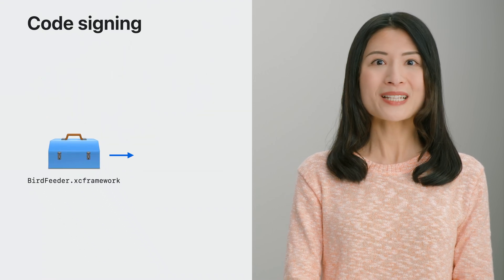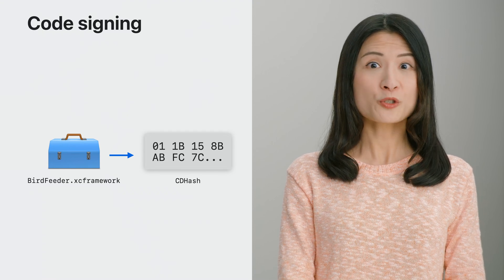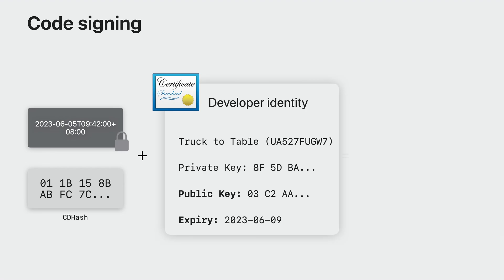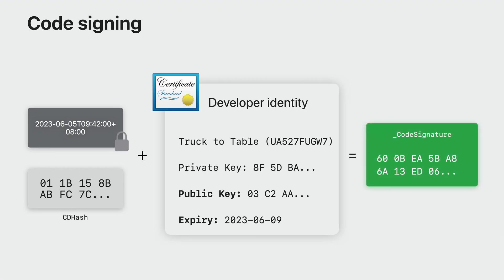At a high level, code signing works by first generating a code directory hash, also known as the CD hash, of your compiled binary. To then sign this hash, you use your developer identity. This identity is represented by your developer certificate. It is made up of a private key that is used for code signing and a public key that is distributed as part of the signature. This signature can be tied back to your identity. This identity is then used to sign the hash and can be combined with a secure timestamp that is used to validate that the signature was generated at a specific point in time. This ensures that if anyone tampers with your SDK, the signature will no longer be valid. It also allows app developers to verify that it was you who signed it, using the certificate that is embedded into the signature.